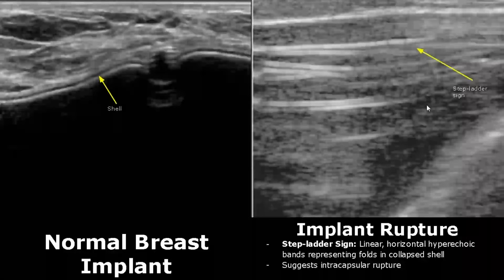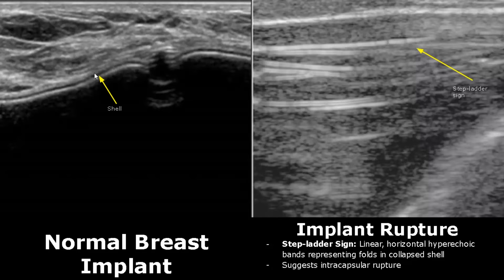A normal breast implant is anechoic with a double-layered hyperechoic shell, and these are the normal breast tissues. In an implant rupture, we have a step-ladder sign, which consists of linear horizontal hyperechoic bands representing folds of a collapsed shell, suggesting intracapsular rupture.